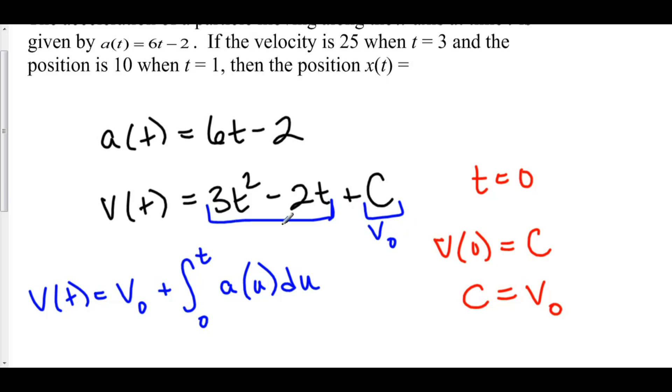So here we have our net change, which is the integral of acceleration, plus some actual value of velocity that will help me figure out what the true velocity is at any given moment. Now, without this c, I can find the net change in velocity. However, without this initial velocity, I don't know what my actual velocity is.